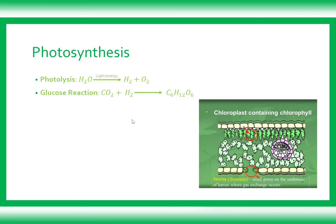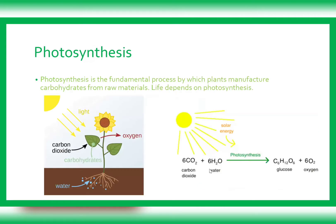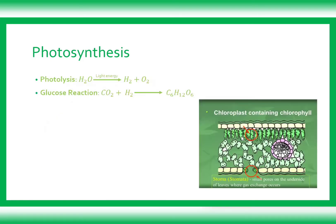Looking at the equation: we have carbon dioxide and hydrogen and water. Solar energy breaks the water molecule into hydrogen and oxygen. That hydrogen molecule then binds with the carbon dioxide molecule to give glucose. The oxygen released comes from the water molecule being broken down by solar energy.